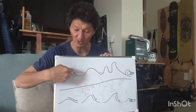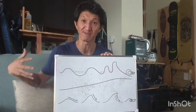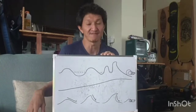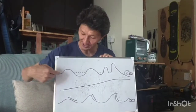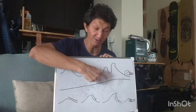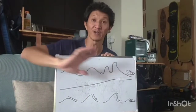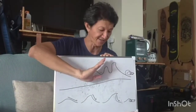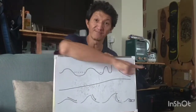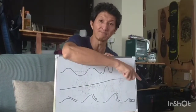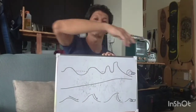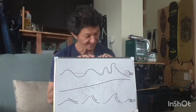Waves are generated by swell. Swell is generated by weather, by cruise ships passing by, or by other factors. When it hits the shallow zone it starts to compress because there's nowhere to go — the wave compresses, starts forming a push, and then it breaks. When it breaks, it dumps and becomes white foam that pushes you forward.